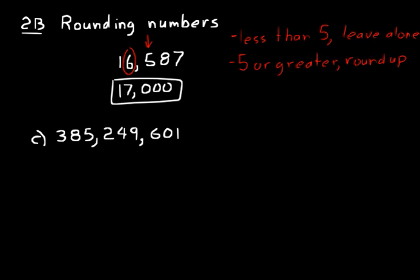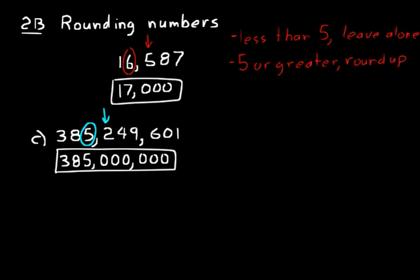Let's do a practice problem. Round this number to the nearest millions place — in other words, to the nearest million. We circle the digit in the millions place, which is the five, and put an arrow over the digit to the right, which is in the hundred thousands place — that's a two. Since two is less than five, we leave the circled digit alone. So we write 385 million, putting zeros in all the other places. That's the number rounded to the nearest million.